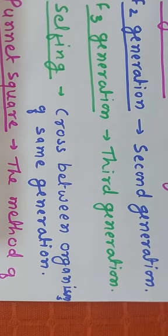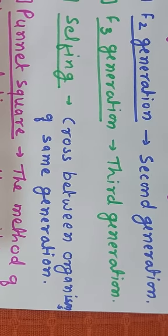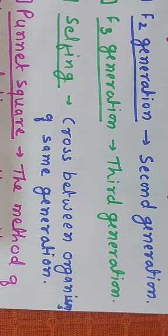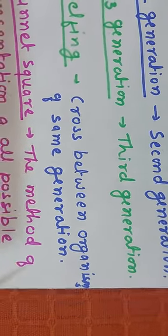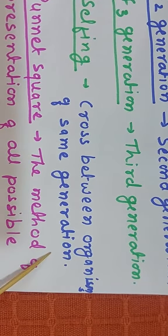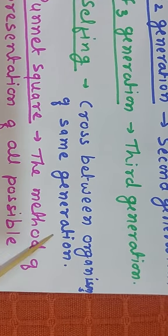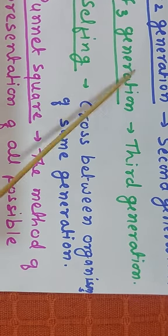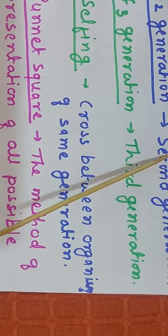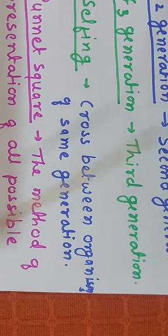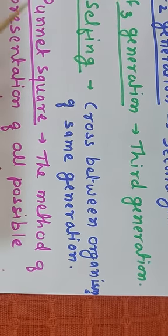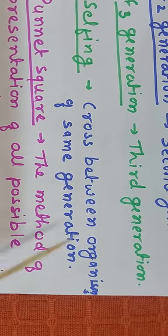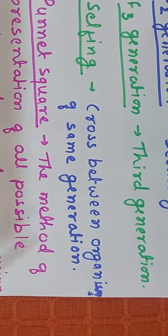Next is selfing. The term selfing is used when individuals of a generation produce the next generation among themselves. Selfing means a cross between organisms of the same generation. For example, a cross between individuals of the F1 generation with each other is called selfing.